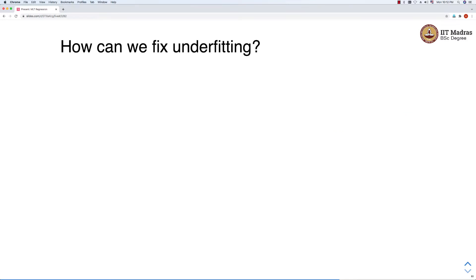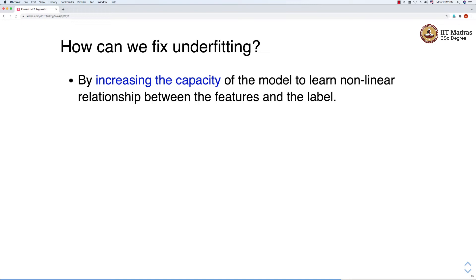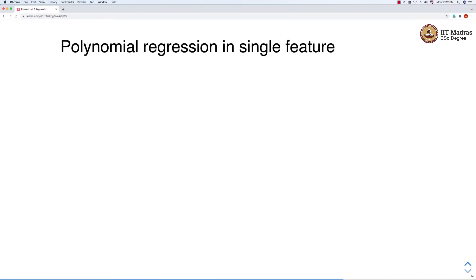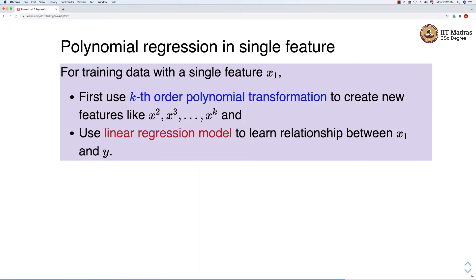How do we fix underfitting? We can fix it by increasing the capacity of the model to learn nonlinear relationships between features and labels. One way to increase the capacity is by taking polynomial transformations, which construct new features from the existing features. For training data with a single feature x1, we use kth order polynomial transformation to create features like x1 squared, x1 cubed, all the way up to x1 raised to k. Then we use a linear regression model to learn the relationship between these transformed input features and the output label.